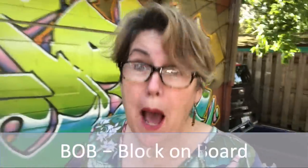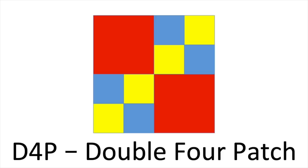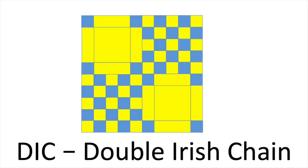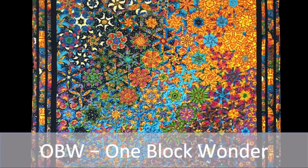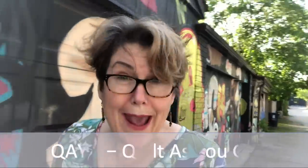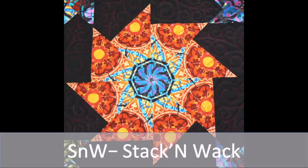But don't confuse that with an FAQ, which are frequently asked questions. You might have a BOB — a block on board — as in what block is on your design board. That might be a D4P, a double four patch; a DIC, a double Irish chain; or a TIC, a triple Irish chain. Your block might be an OBW, a one block wonder; or a QAYG, quilt as you go; or an SNW, a stack and whack — which is a lot more fun than it sounds.